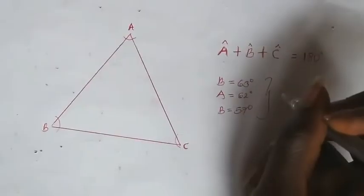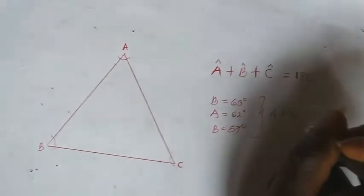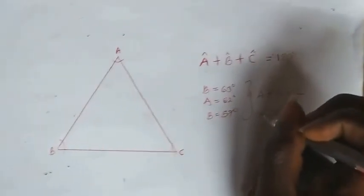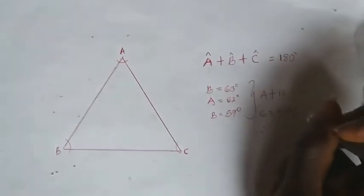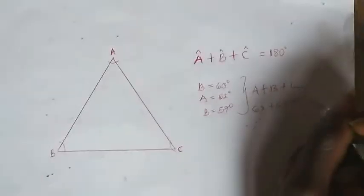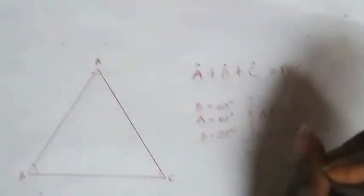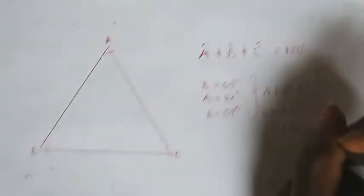The sum of angles in a triangle should equal 180 degrees. So A plus B plus C: I'll be having 62 plus 63 plus 75. The summation of all these angles here should give us 182 degrees.